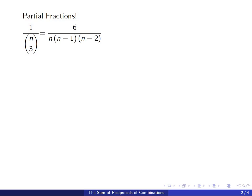Now we are going to split this into three different fractions: a over n plus b over n minus 1 and c over n minus 2 where a, b, and c are constant. Now we're going to find a, b, c.